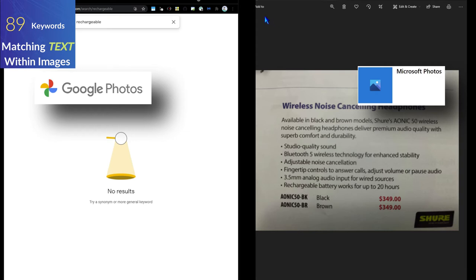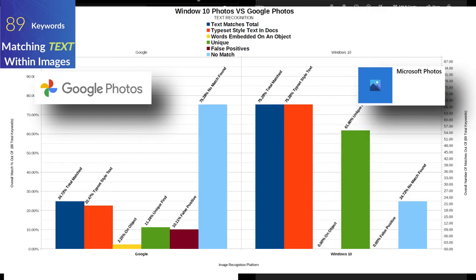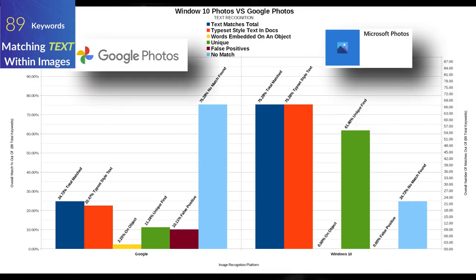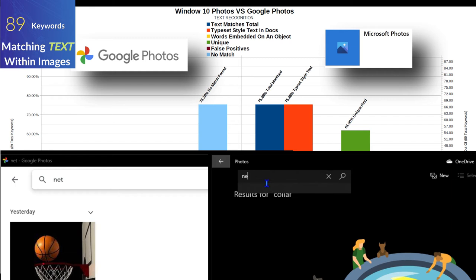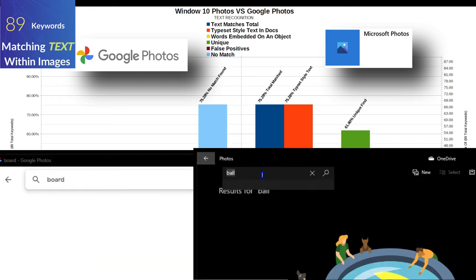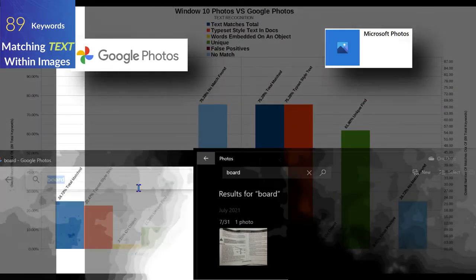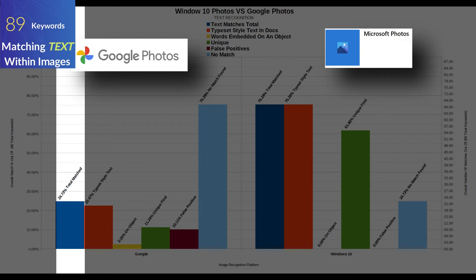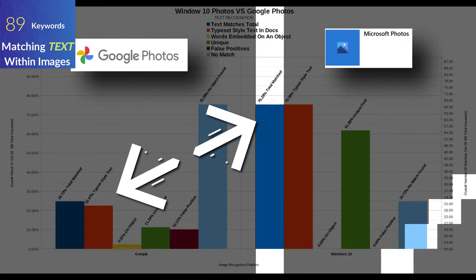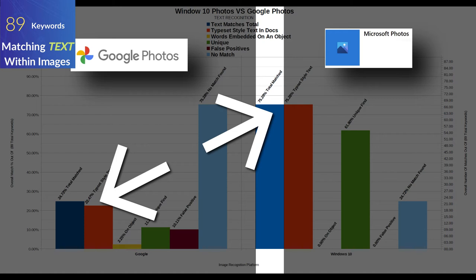We chose 89 keywords that humans could identify within these images — some were a little blurry but mostly clear and visible. Looking at that chart, the dark blue column shows total text matches: Google returned a positive text match 24.72% of the time, while Windows 10 found a text match 75.28% of the time out of those 89 keywords. A complete reversal — everything's getting turned on its head.